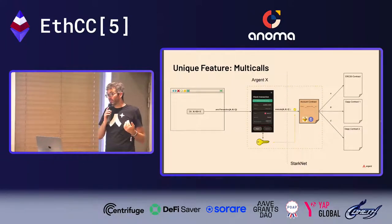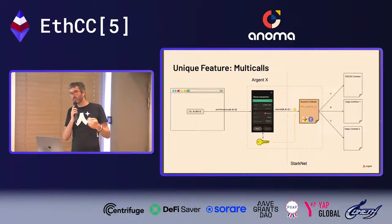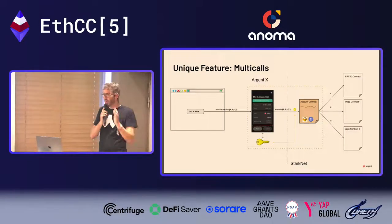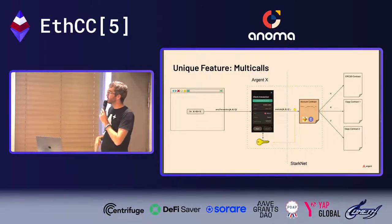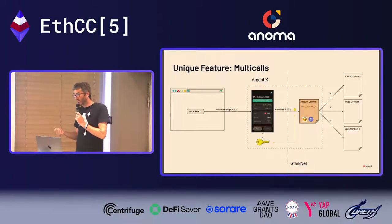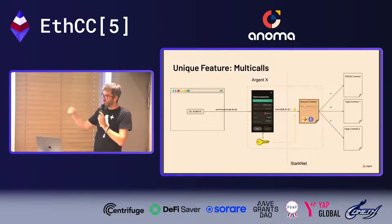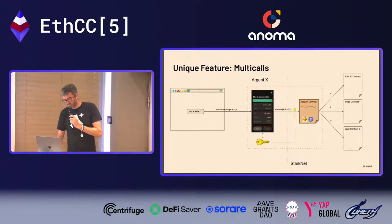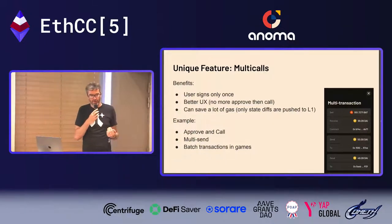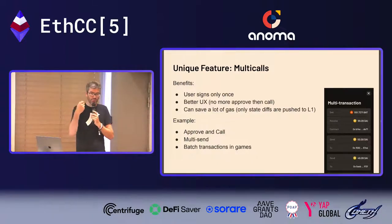Multicall enables you to execute a sequence of calls in one transaction. For example, a dApp wants to chain three operations — you can bundle them in a multicall and the wallet executes them in one transaction. The account contract orchestrates all these calls. For the user it's only one signature, simplifying UX. Think of the painful approve-and-call pattern on Ethereum — with multicall it happens in one transaction.